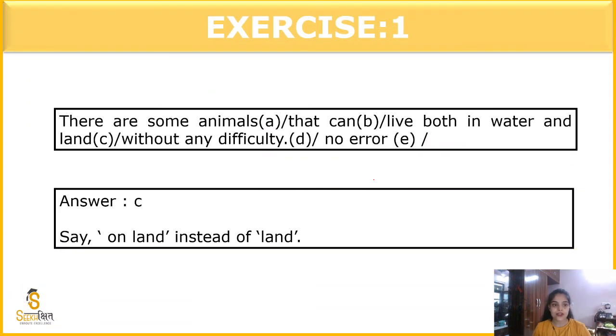The next question is, there are some animals that can live both in water and land without any difficulty, no error. So, the error is in the part C itself because here only 'land' is written. So, it should be 'on land' instead of 'land'. Say on land because they are living on top of it. We have to tell preposition. We have to tell the linkage. We have to show what is its relation. So, the correct statement will be, there are some animals that can live both in water and on land. In water is used, so on land should be used. If 'in' was not there, then 'on' would not be there. Then we could have just simply said, both water and land.